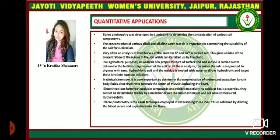In clinical chemistry, it is very important to determine the concentration of sodium and potassium ions in body fluids, since their ratio controls the actions of muscles including the heart. Since these ions form few insoluble compounds and exhibit essentially no acidic or basic properties, they cannot be determined readily by conventional wet chemical techniques and are usually measured instrumentally. Flame photometry is the usual technique employed, achieved by diluting the blood serum and aspirating it into the flame.